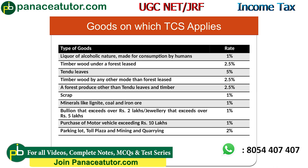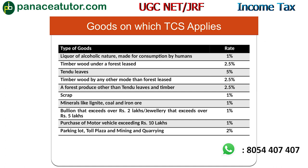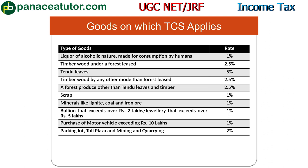To learn these rates, first learn the 1% items, then 2%, then 2.5%, and then 5%. Note that 5% appears in only one case — Tendu leaves. The government fears that buyers in these categories may not deposit tax themselves.